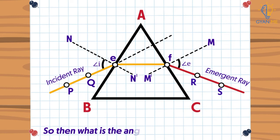So then what is the angle of refraction here? Yes, it is this. Mark these angles, that is angle of incidence I, the angle of refraction R and the angle of emergence on the sheet.